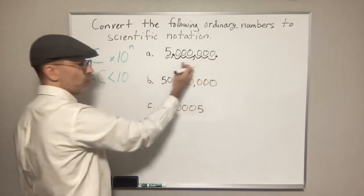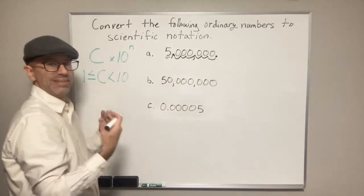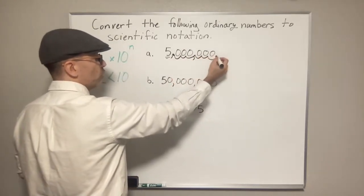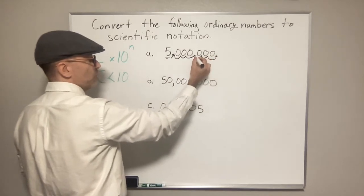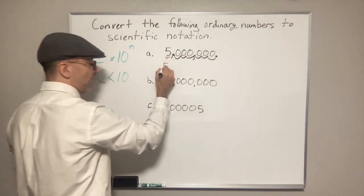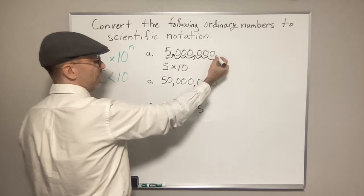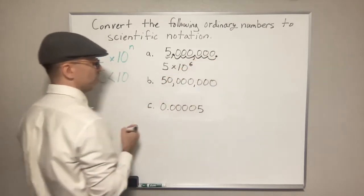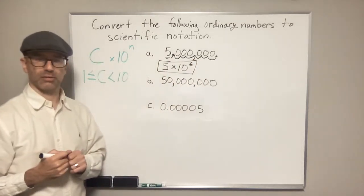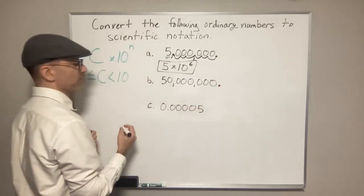Once we move it over, we count the number of times we moved it: one, two, three, four, five, six — so we moved it over six times. That means our exponent is going to be a positive six, because we have a large number and we moved it to the left. Large number means positive exponent. So the answer is 5 × 10^6. That's the number in scientific notation.